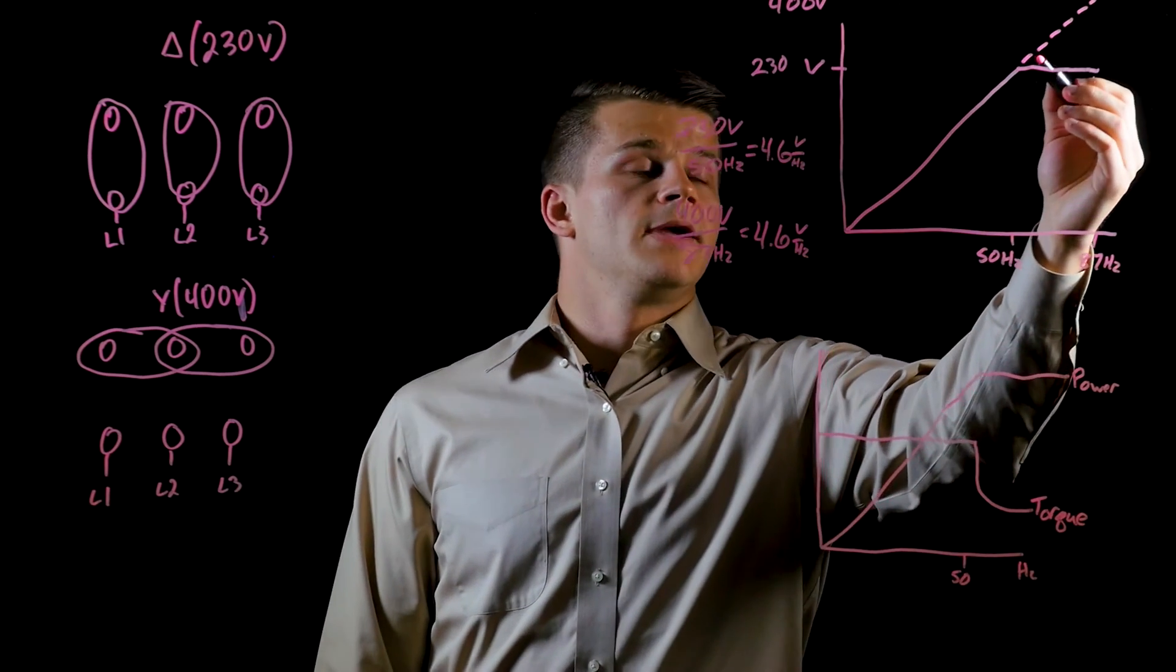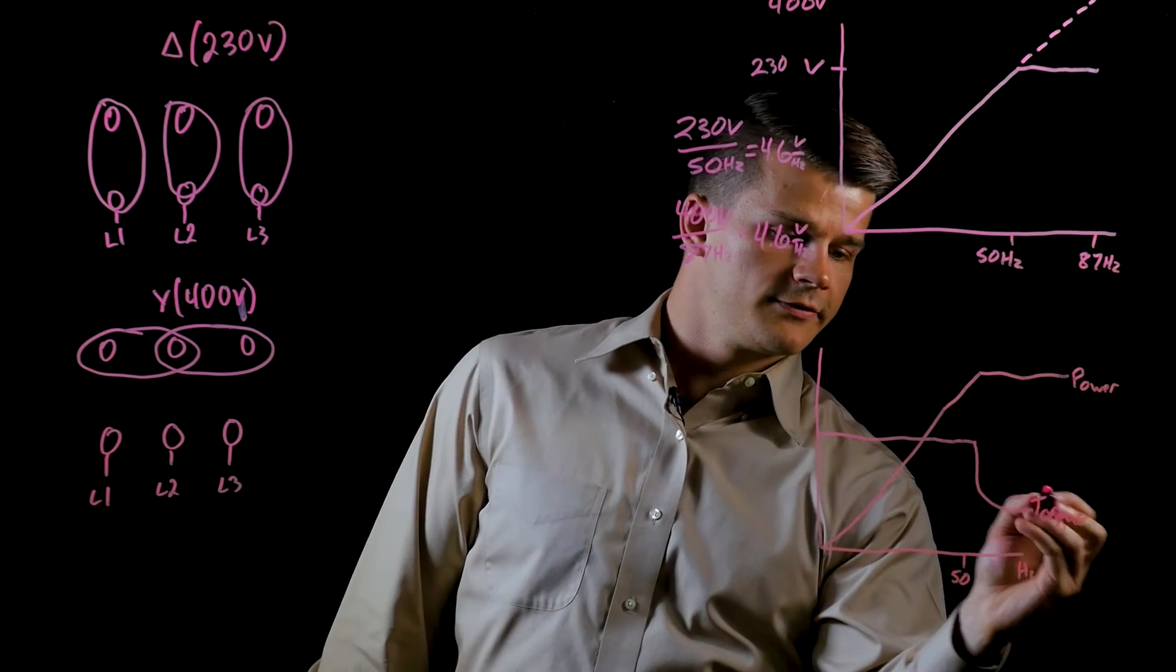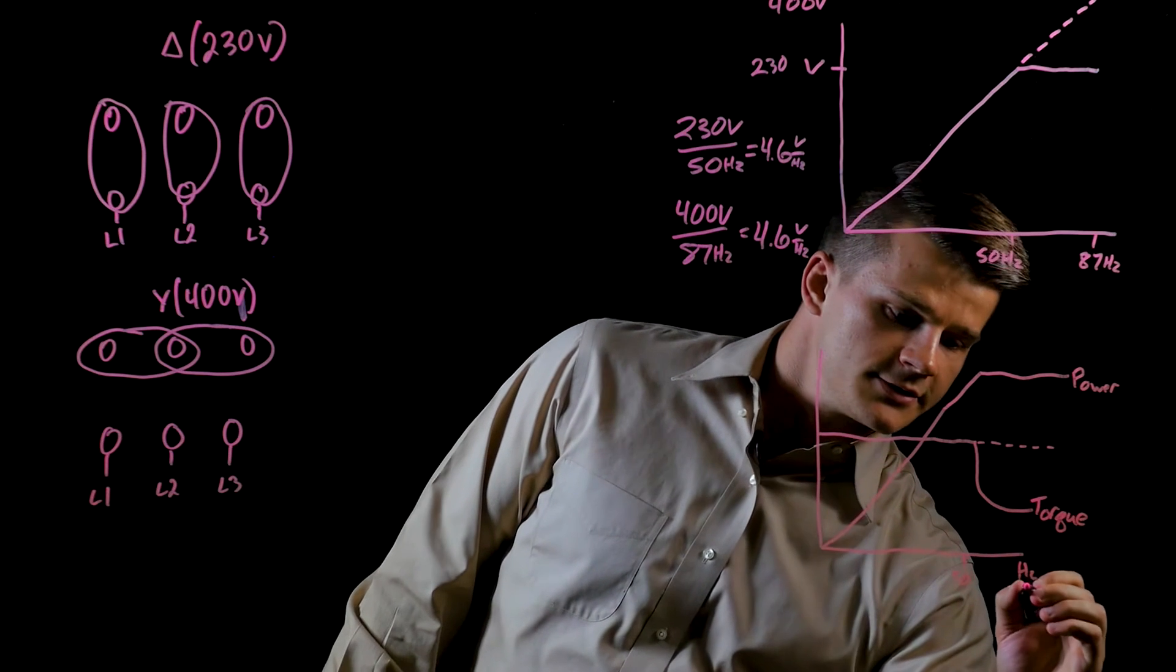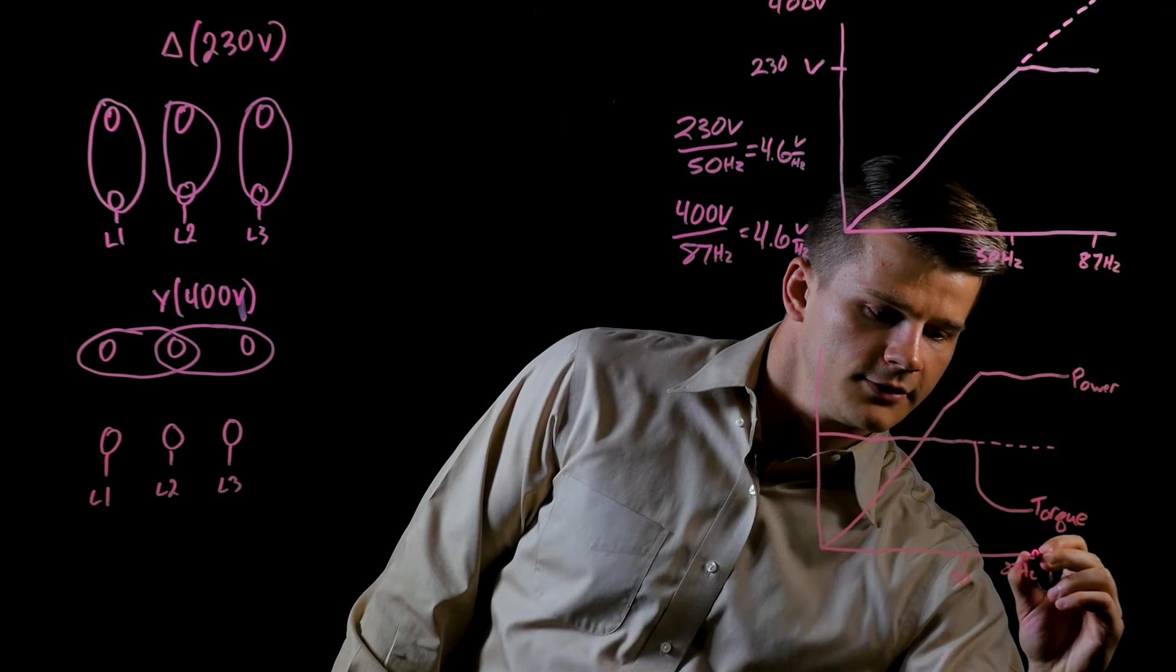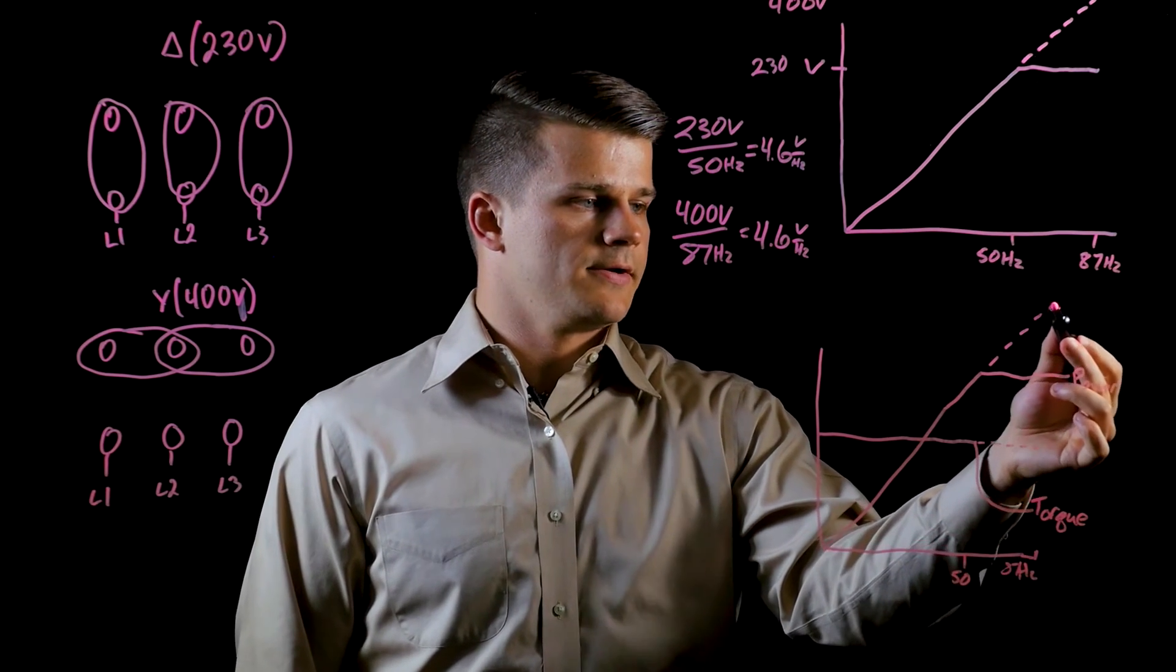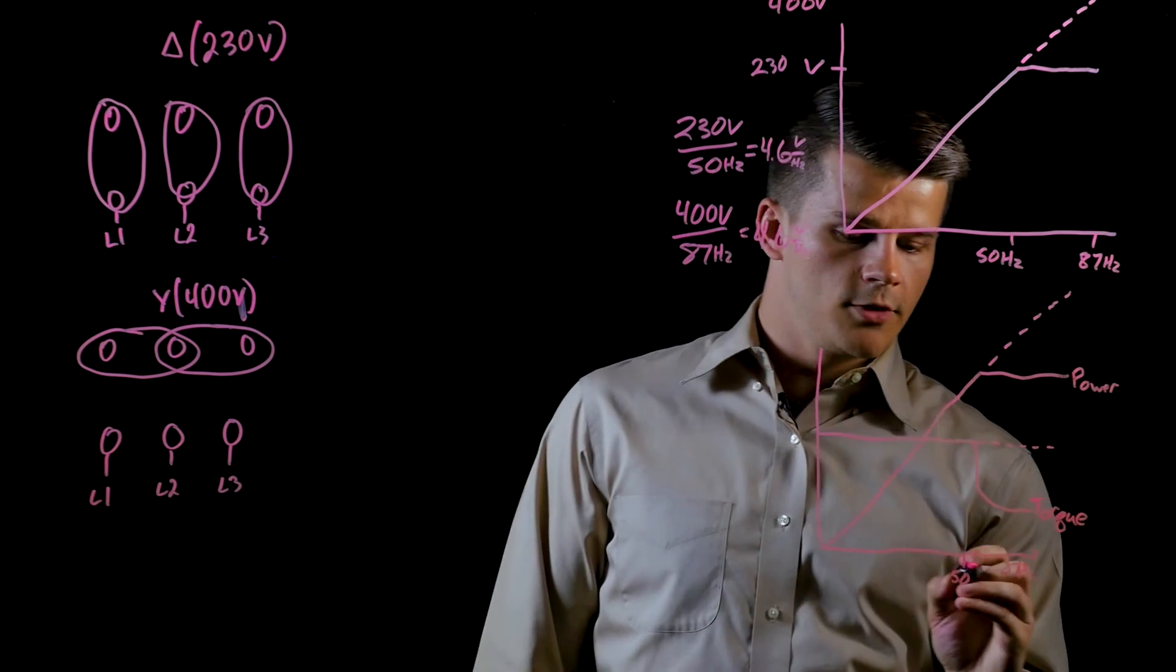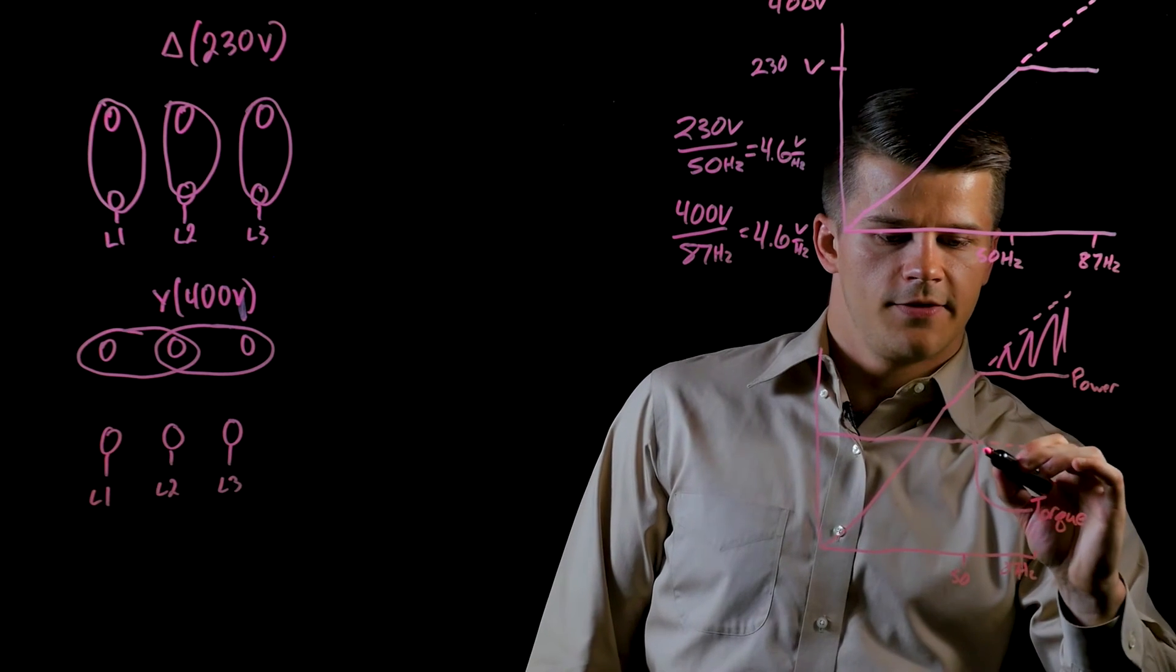Because we're maintaining this ratio constantly from 50 to 87 Hertz, we still maintain our constant torque out to 87 Hertz. The same thing with the power—that also keeps increasing. So as we go from 50 to 87 Hertz, we gain all this extra power and the torque maintains constant.